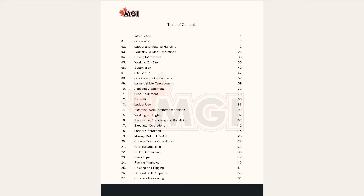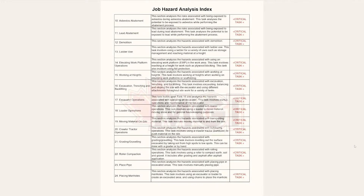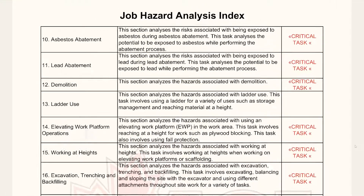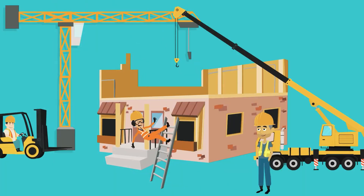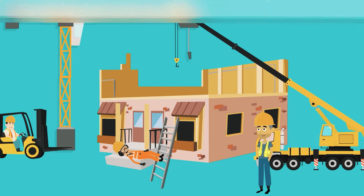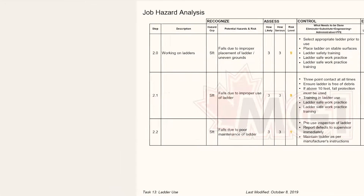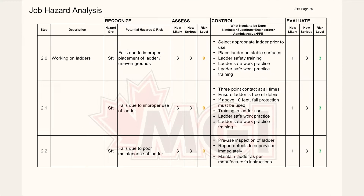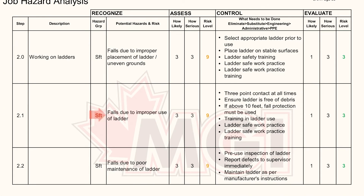Employees must familiarize themselves with all JHA tasks relevant to their position. The Job Hazard Analysis Index will help identify potential hazards that may arise from the work you will be performing. Here, we see a worker using a ladder in an improper manner, resulting in potential injury. Be sure to be familiar with the safe work practices or safe job procedures associated with the task at hand, and refer to the index for more information.